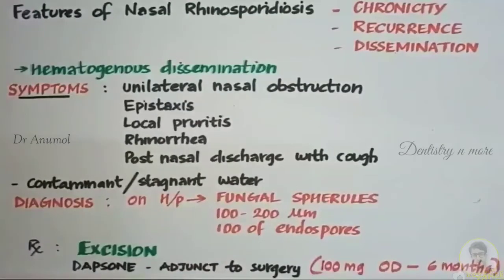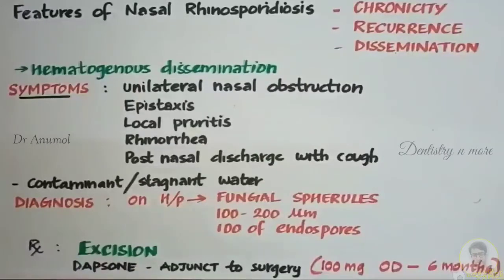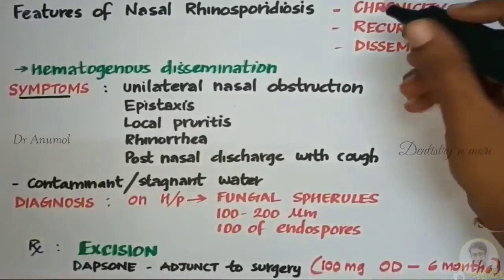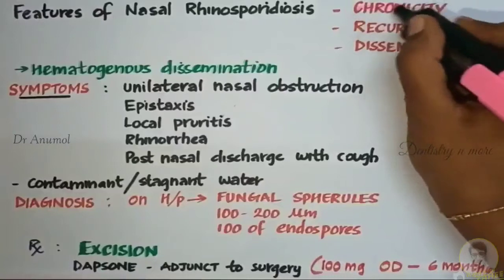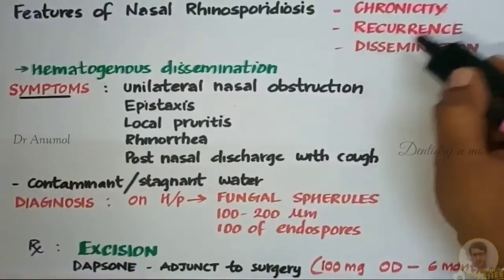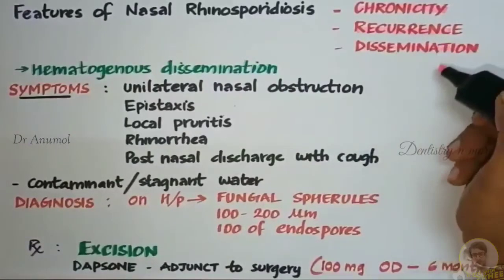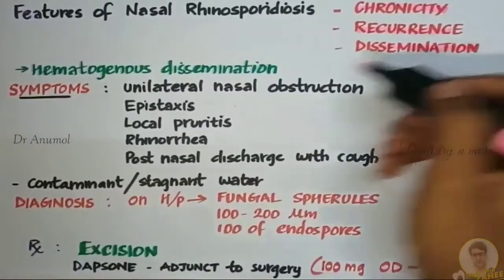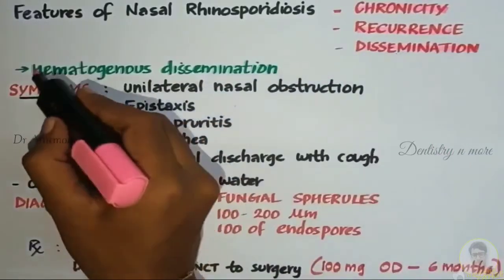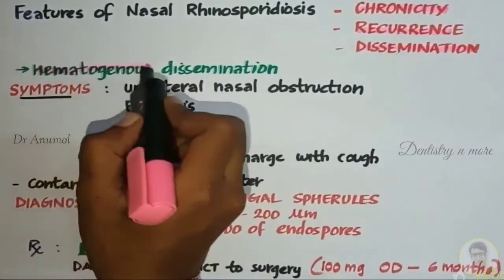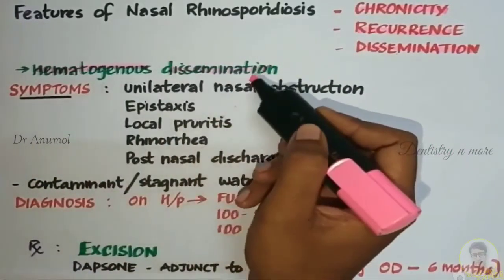Nasal Rhinosporidiasis has three cardinal features: chronicity, recurrence, and dissemination. Usually in nasal Rhinosporidiasis, hematogenous dissemination is recorded.